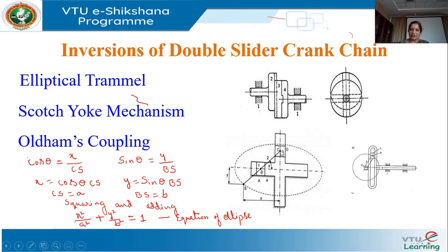C and D are the blocks sliding inside the fixed frame. There is a sliding pair between A and B, and also between C and A there is a sliding pair. With reference to BC, it is a turning pair. So we have two sliding pairs and two turning pairs.